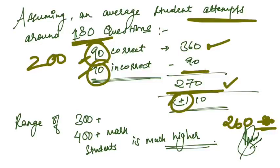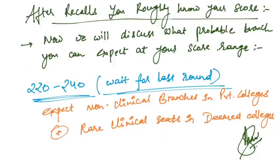The range of 300 plus and 400 plus marks students is very much high according to the survey and poll conducted. After recalls, you roughly know how much you are scoring. Now we will discuss what probable branch you can expect at your score range.